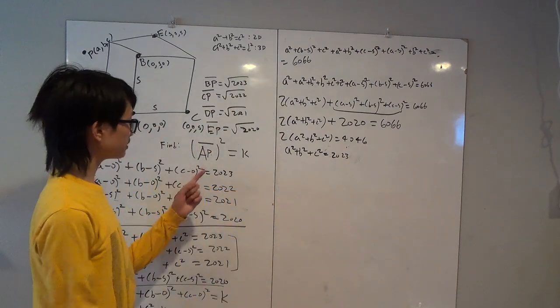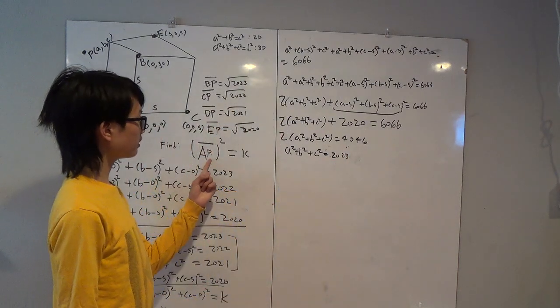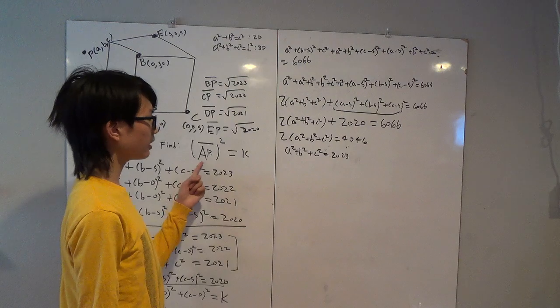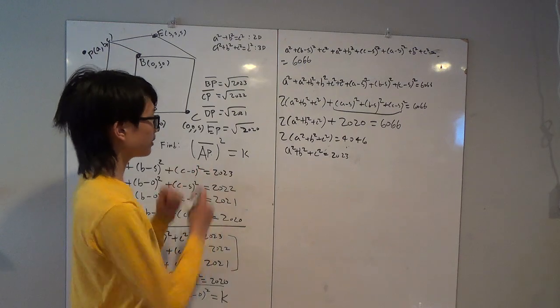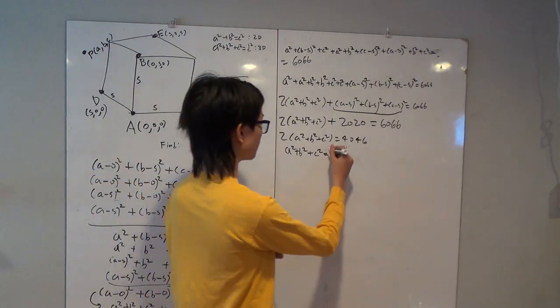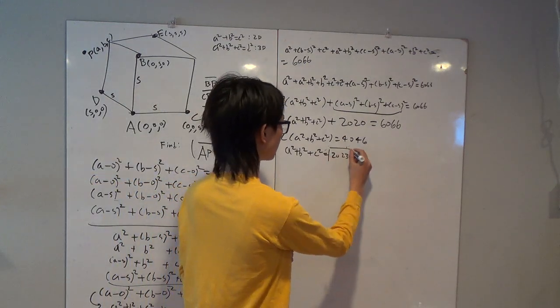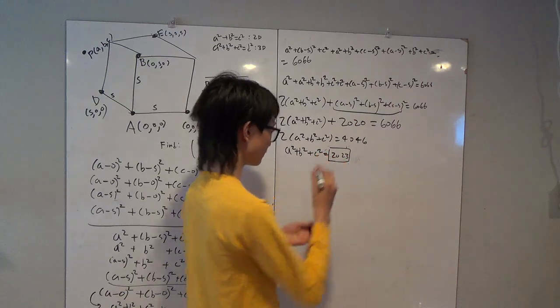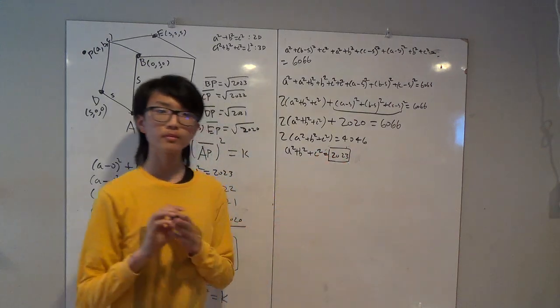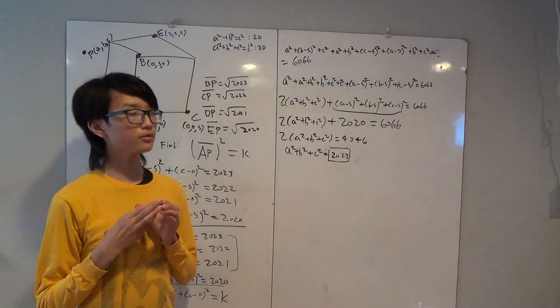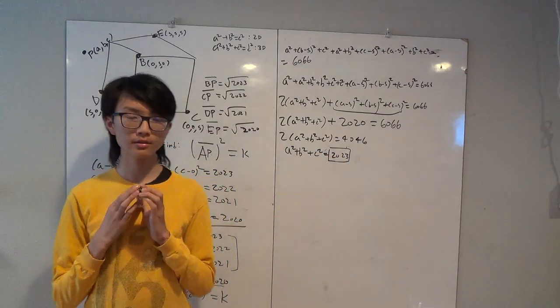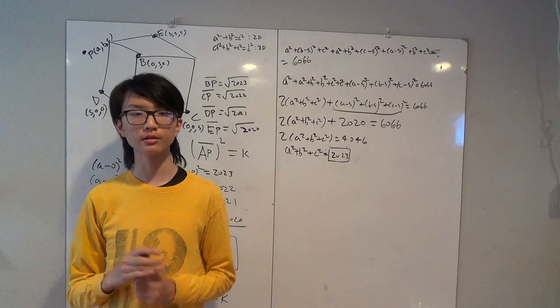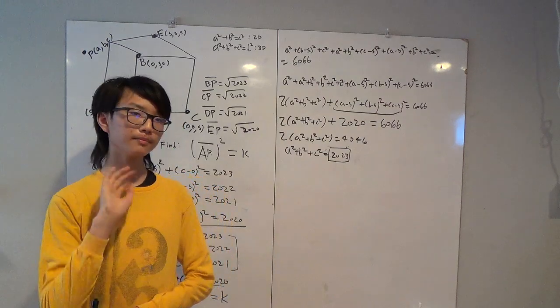The distance between point P and point A squared is equal to 2023. I hope you enjoyed this video, and thank you very much for watching. I'll see you next time.